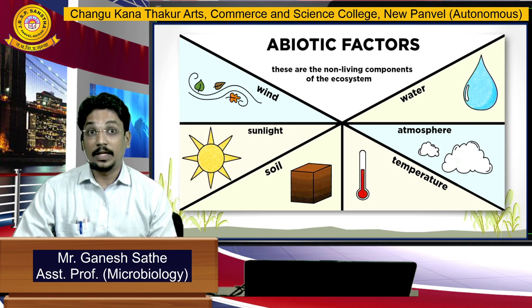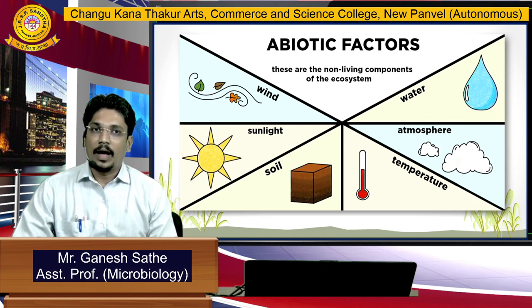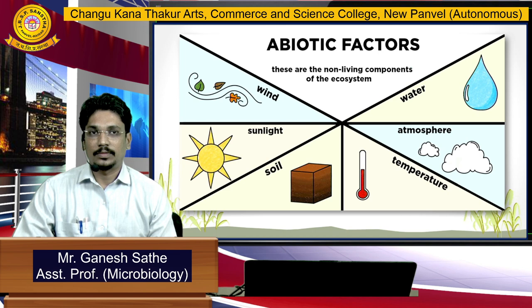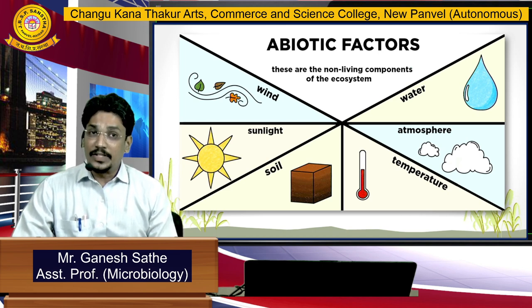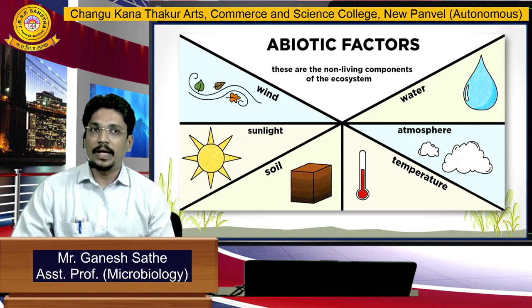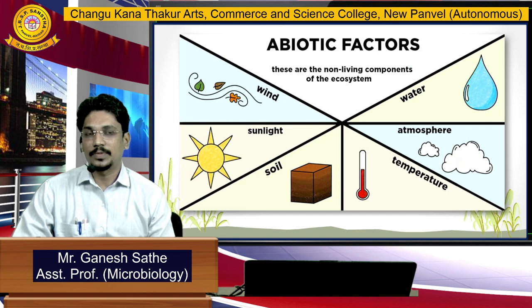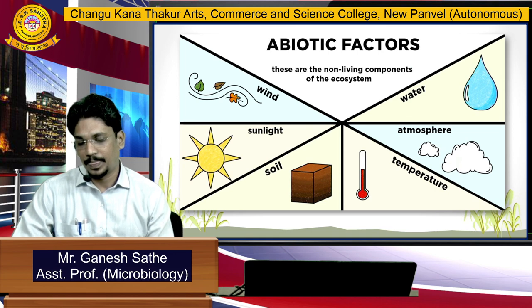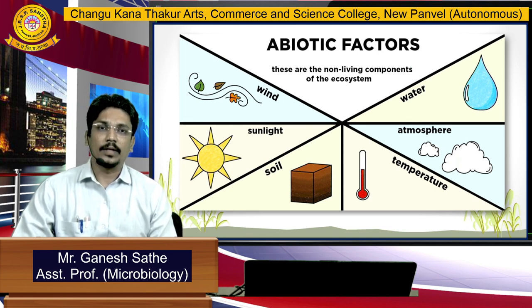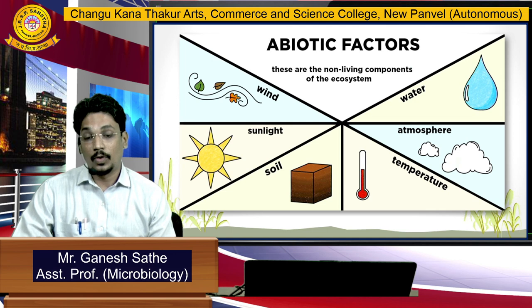The lithosphere — 'lithos' means rock — and the hydrosphere — 'hydro' means water — and so on. Considering temperature, we have two main seasons: winter season and summer season. Especially in India, we have three types: winter, rainy, and summer season. In the case of soil, there are different types of soils.